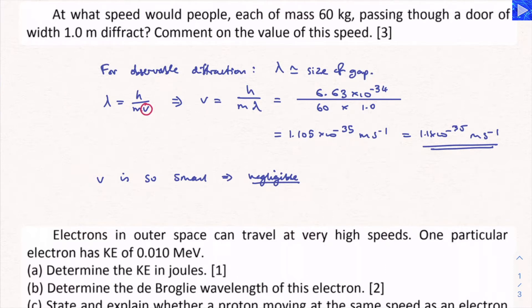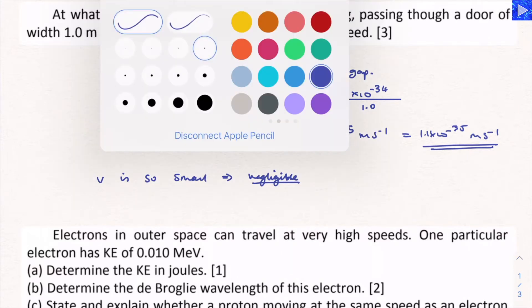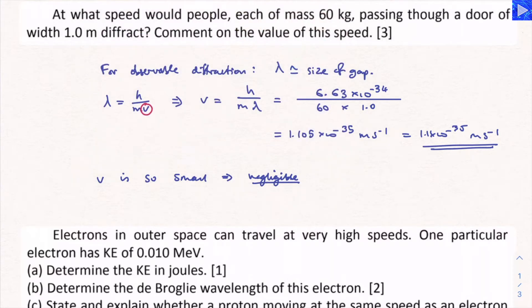And it's sometimes helpful to have some reference values in your mind. So the diameter of an atom is about 10 to the minus 10 meters. So you're going an incredibly tiny fraction of an atom per second at 1.1 times 10 to minus 35 meters per second.